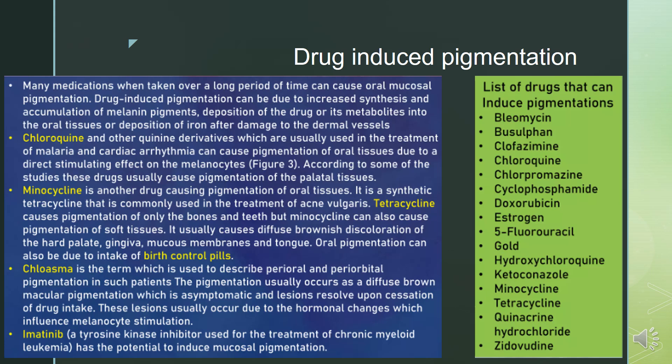Chloroquine and other quinine derivatives, usually used in the treatment of malaria and cardiac arrhythmias, can cause pigmentation of oral tissues due to a direct stimulating effect on the melanocytes. According to some studies, these drugs usually cause pigmentation of the palatal tissues.